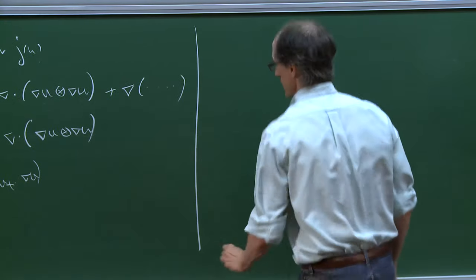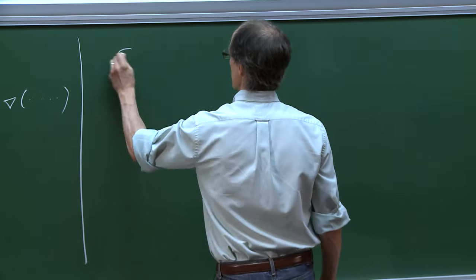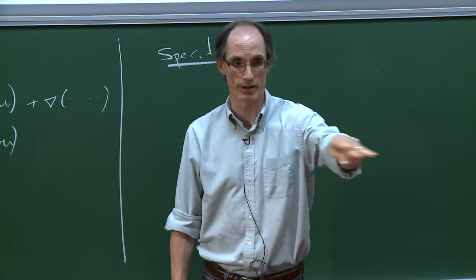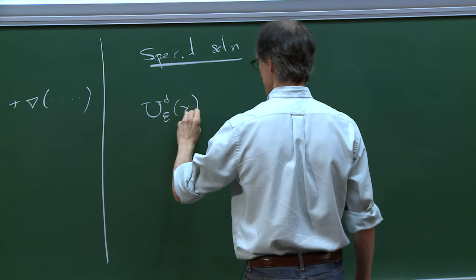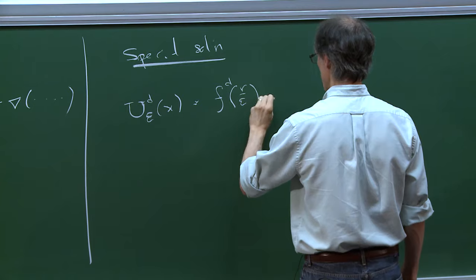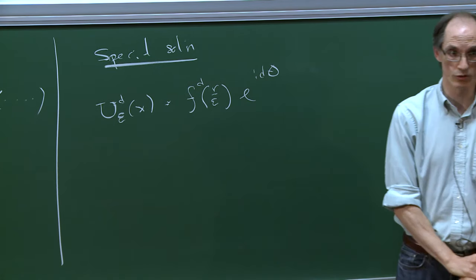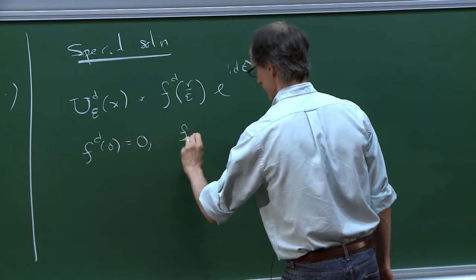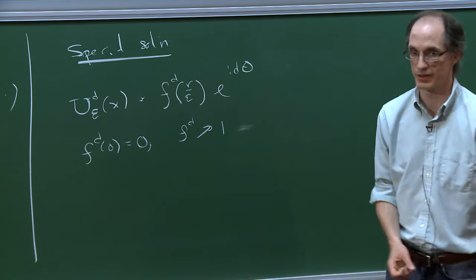Let me describe a special solution of both equations — the simplest, what one refers to as a vortex solution. A special solution will be one that depends only on the horizontal x variable, independent of z and t. For every integer d, let's write u^d depending only on x and the parameter epsilon. It'll have the form e^{idθ} times a modulus depending on d and scaling like r/epsilon. Making this ansatz, you get an ODE for f_d with f_d(0)=0, and f_d increasing to 1 as the radial parameter goes to infinity.